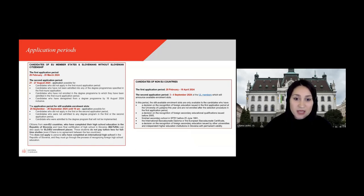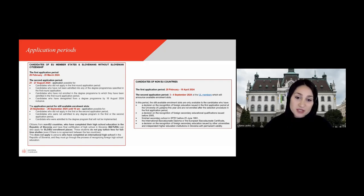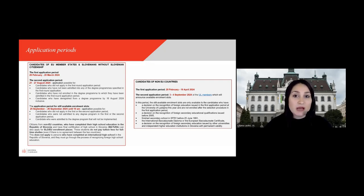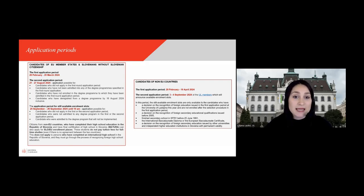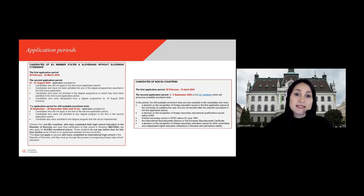Be aware of the different deadlines as you can apply during several application periods and the deadline depends on your citizenship. Citizens of an EU member state or Slovenians without Slovenian citizenship can apply in the first application period from 20th February to 20th March, and in the second application period from 21st to 27th August. For citizens from non-EU countries, you can apply from 20th February until 19th April in the first application period, and on 3rd and 4th September in the second application period.